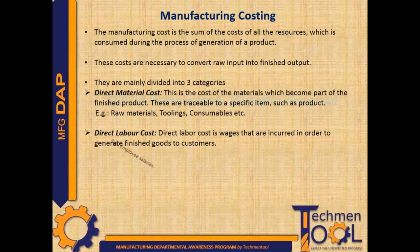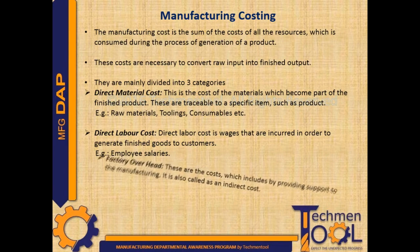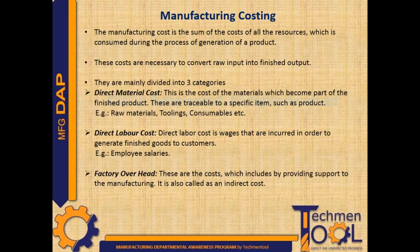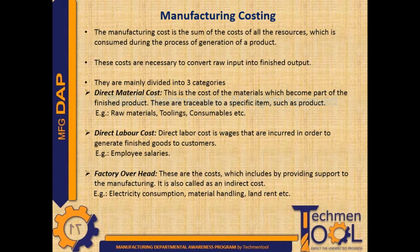Direct labor cost refers to the wages that are incurred in order to generate finished goods for customers. For example, employee salaries. Factory overhead includes costs that provide support to the manufacturing process. It is also called an indirect cost. Examples include electricity consumption, material handling, land rent, etc.